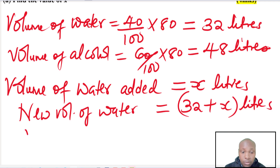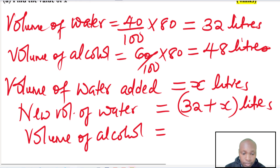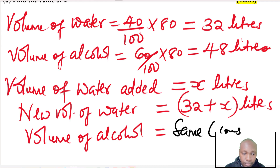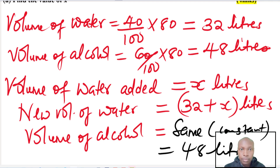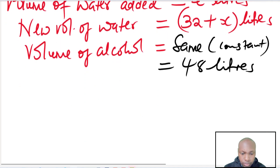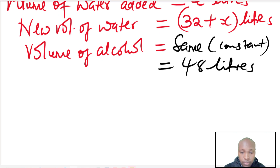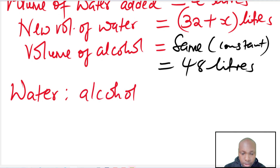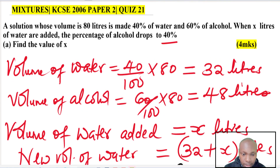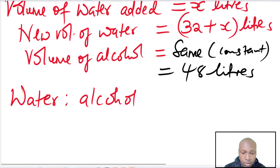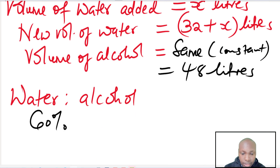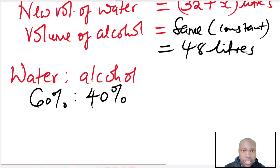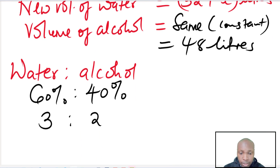The volume of alcohol is not affected — it remains constant at 48 liters. Now, after x liters are added, alcohol drops to 40 percent, so water becomes 60 percent. The new ratio of water to alcohol is 60 to 40, which simplifies to 3 is to 2.